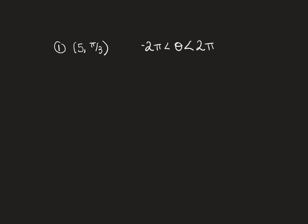Let's draw where this point is first. π/3 is right here, and counting out to the 5th ring, that's where the spot is. Instead of going up this way, I could go down and around the other way — that would be called negative 5π/3, and I would keep my radius positive 5, going out to the 5th ring.